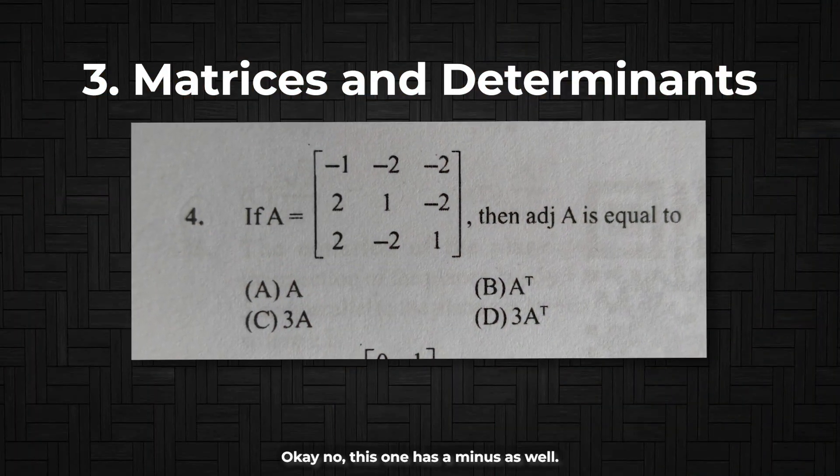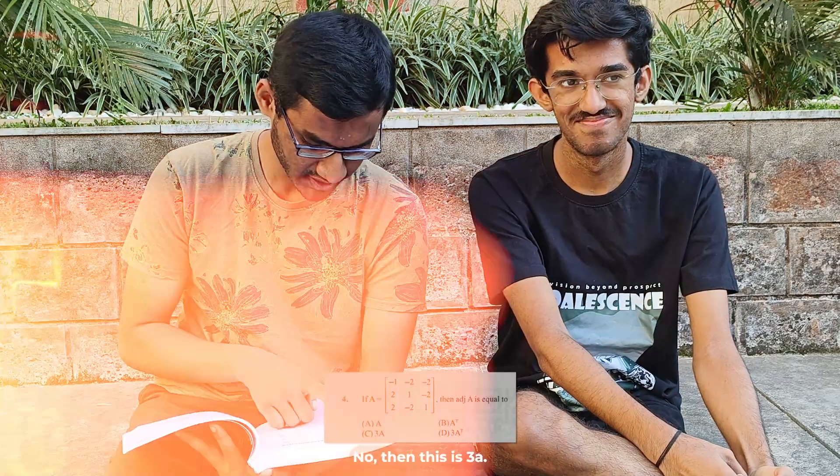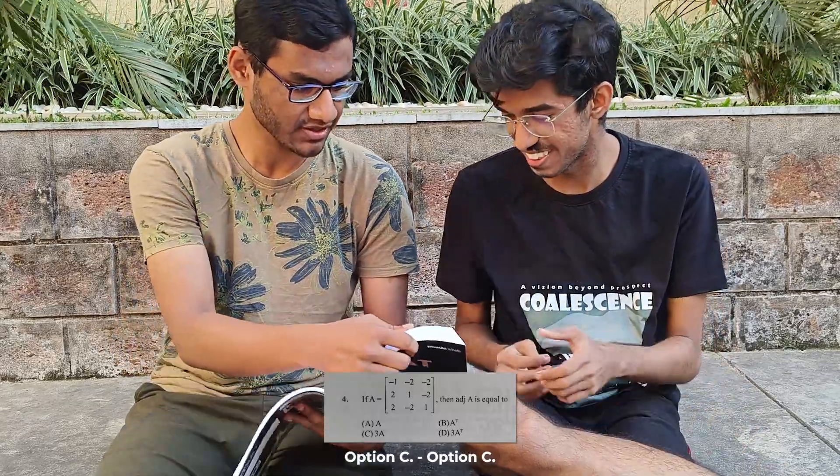Sometimes even the toughest questions you can solve so easily — you just eyeball the options. And your last one was matrices and determinants. But this one is a minus 1, and then this is 3a. Option C. So your answers are 4, B, and 3A.